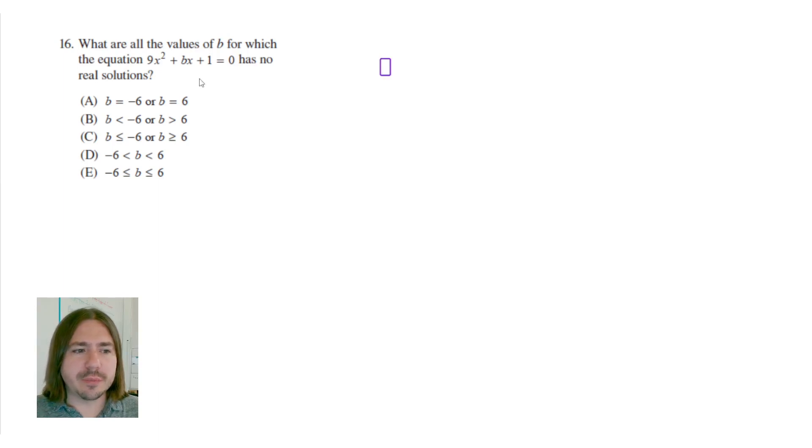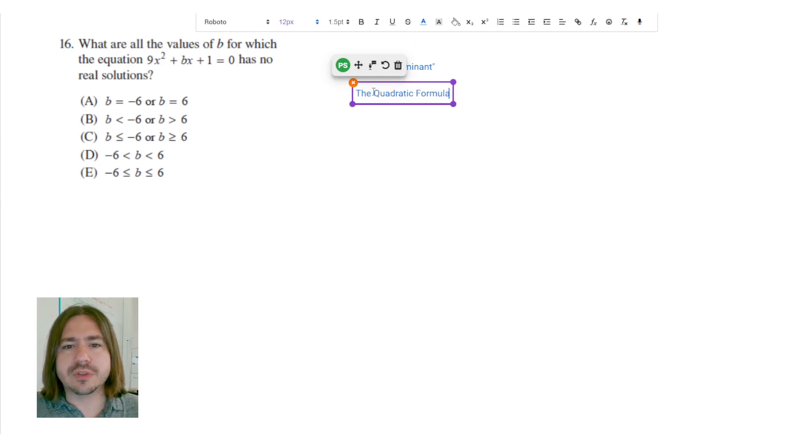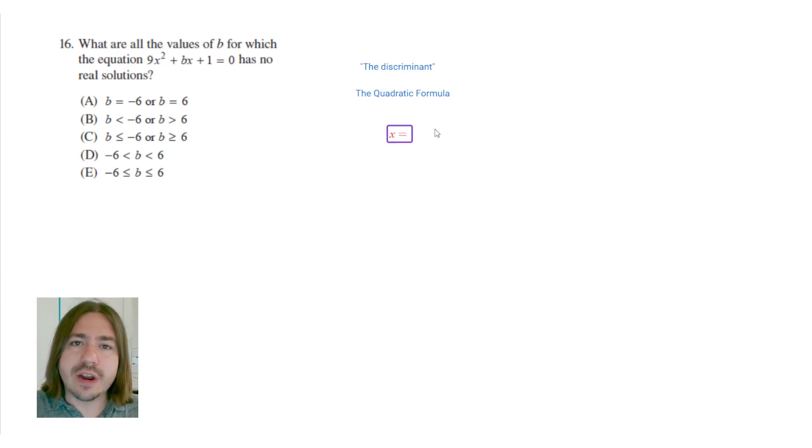To answer this question, we need to understand something called the discriminant. The discriminant is an expression that we can use to determine how many real solutions a quadratic has. So you should know the quadratic formula. Let me go ahead and write it out here for you just as a reminder. The quadratic formula is used to solve a quadratic equation.